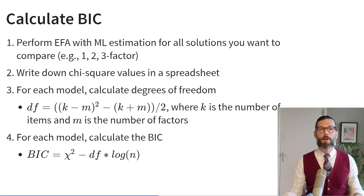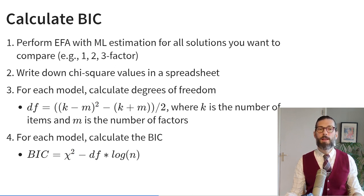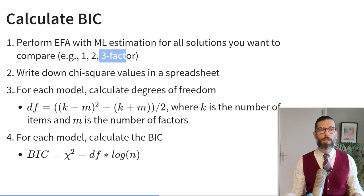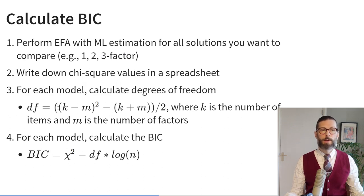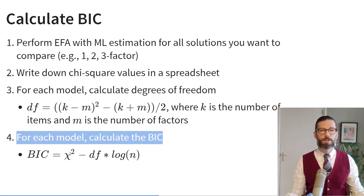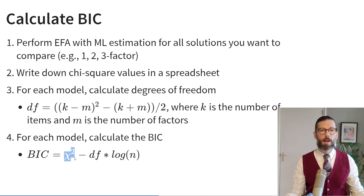To calculate the BIC, first perform exploratory factor analysis with maximum likelihood estimation for all solutions you want to compare — for example, one, two, or three factor solutions. Write down the chi-square values in a spreadsheet and calculate the degrees of freedom for each model as: (k minus m) squared minus (k plus m) divided by 2, where k is the number of items and m is the number of factors. Then calculate the BIC as the chi-square value minus the degrees of freedom times the log of the sample size.